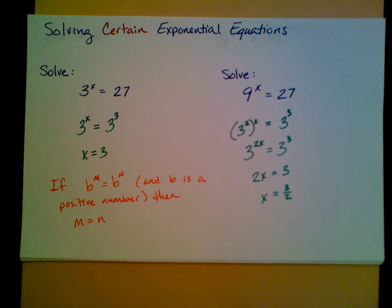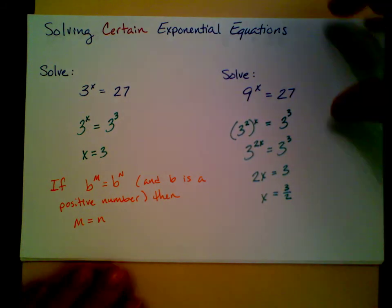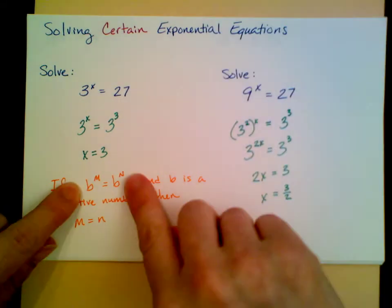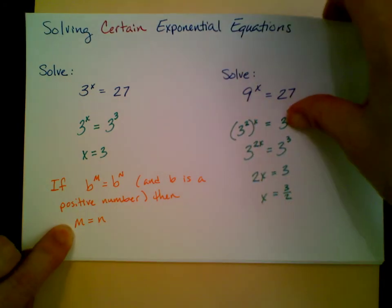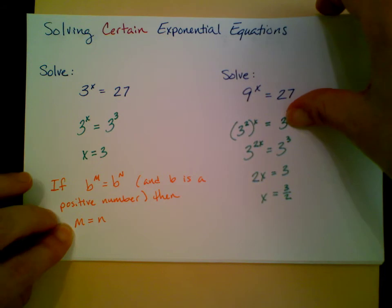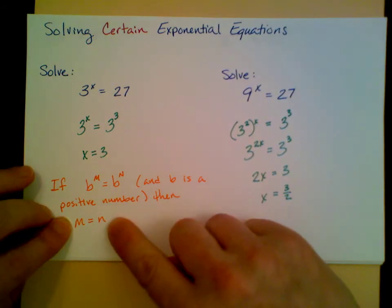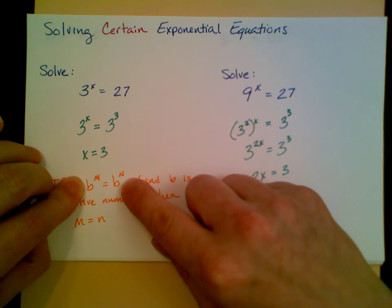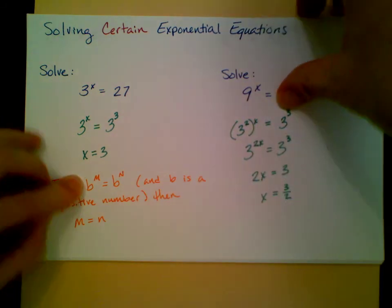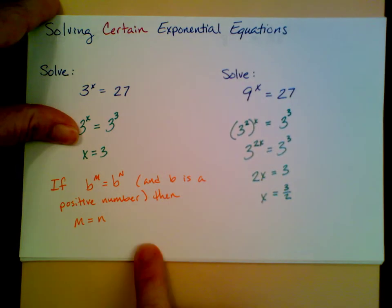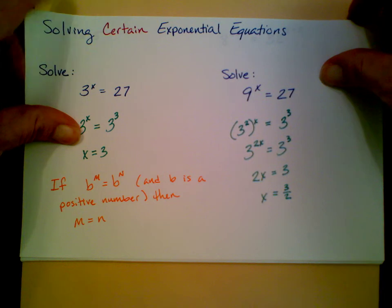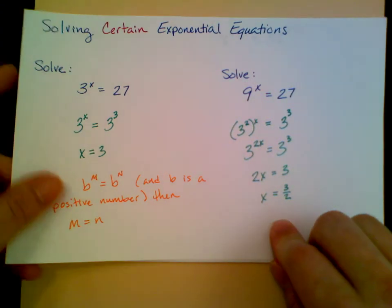If I have that, as long as b is a positive number, I can conclude that b to the m equals b to the n. However, we are using it in the direction that I've written it this way. If b to the m equals b to the n, then m is equal to n. The exponents have to be equal.